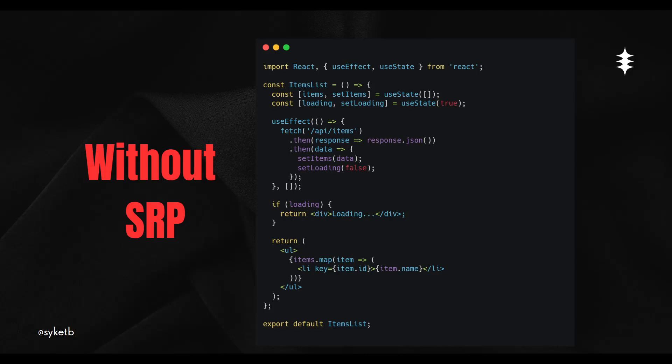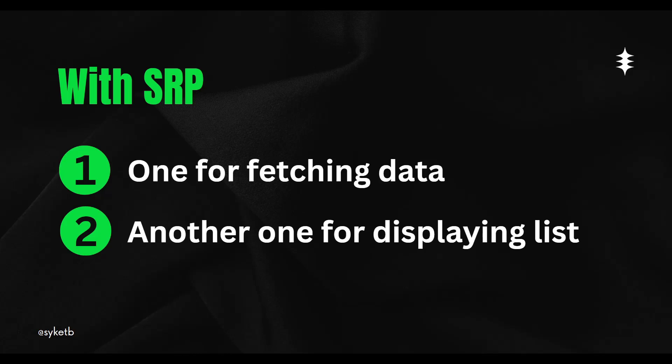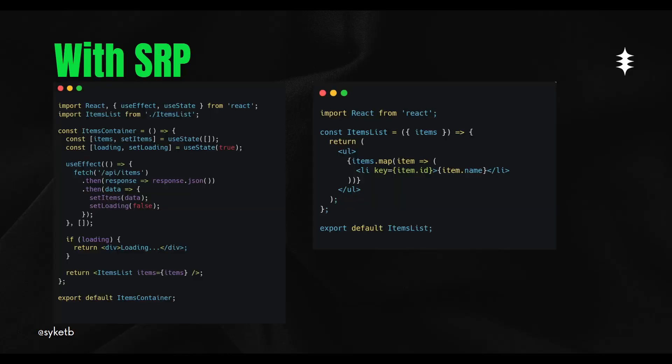About 80% of React developers write code this way. Now let's see how we can make this component follow the Single Responsibility Principle. If I want to build this ItemList component with SRP, I would split it into two components — one for fetching data and another for displaying the list. Here you can see I have already made two components: one is ItemsContainer and another is ItemList. ItemsContainer is responsible for fetching data and storing it in state, while ItemList takes this data as props and only displays it to the users. These two components are each responsible for only one task.